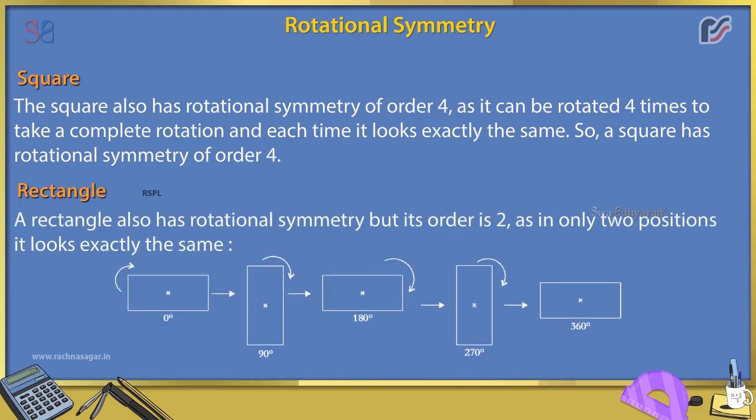Rectangle. A rectangle also has rotational symmetry but its order is 2, as in only two positions it looks exactly the same.